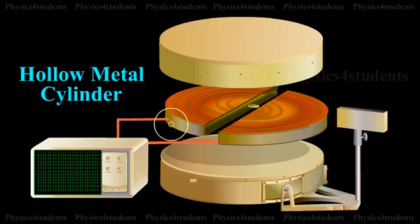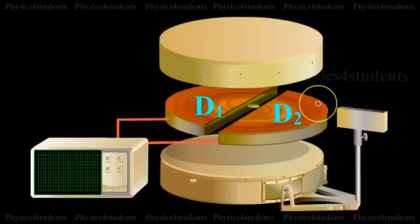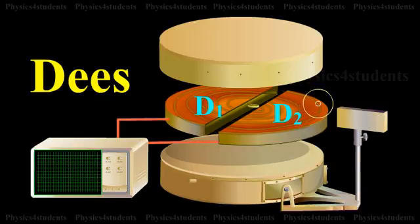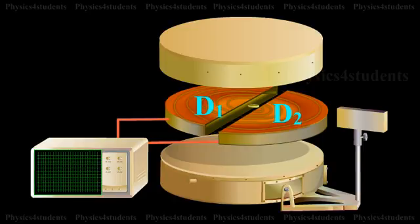Construction: It consists of a hollow metal cylinder divided into two sections D1 and D2 called D's, enclosed in an evacuated chamber as shown in the animation. The D's are kept separated and a source of ions is placed at the centre in the gap between the D's.